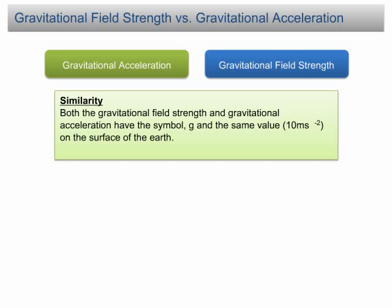Both gravitational field strength and gravitational acceleration have the symbol g and the same value, which is 10 m per second squared on the surface of the Earth.